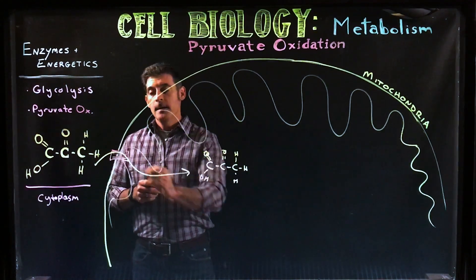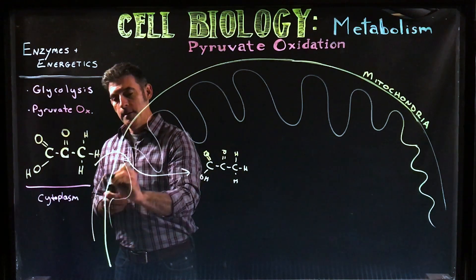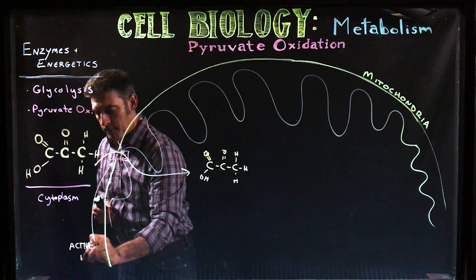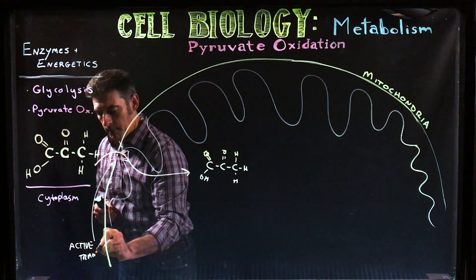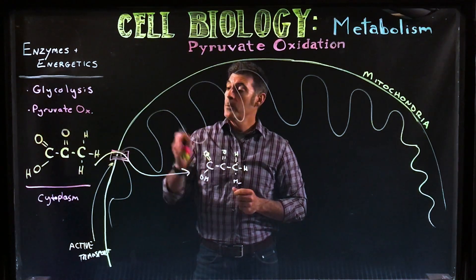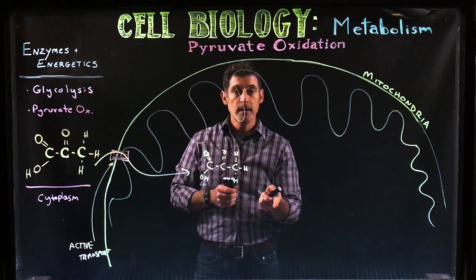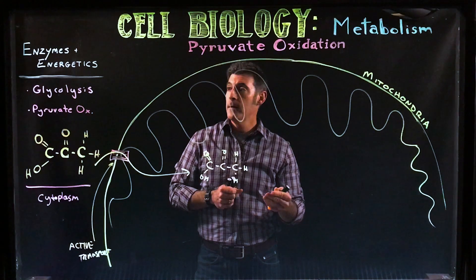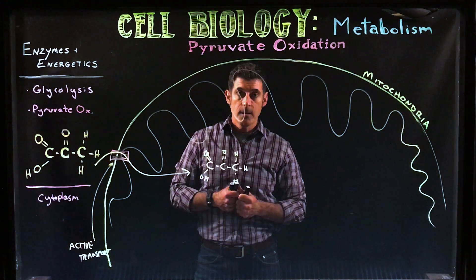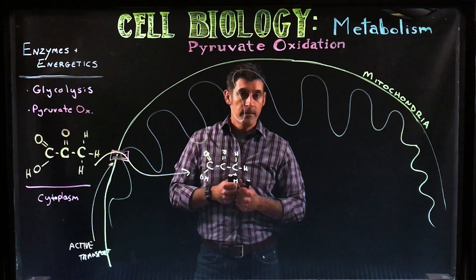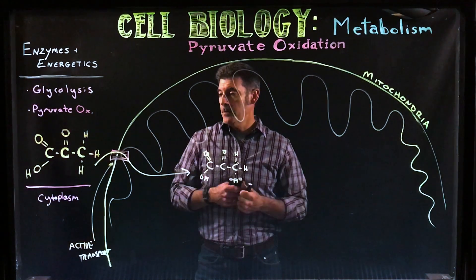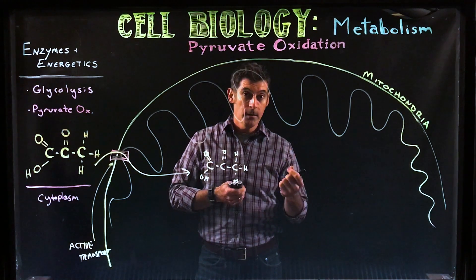This transport process - and hopefully you've studied membrane transport already - is going to be active transport, which means it's going to cost energy. It's going to cost an ATP to bring the pyruvate into the mitochondria. Bacteria, because they don't have mitochondria and all these reactions take place in their cytoplasm, save a little bit of energy. But in eukaryotic cells with mitochondria, we have to bring it in, so it costs a little bit.